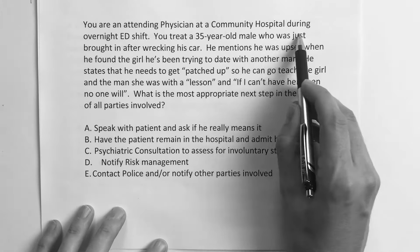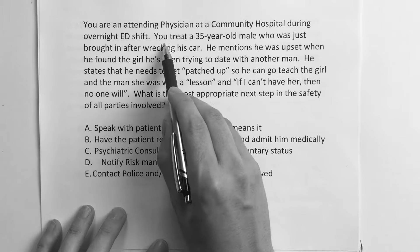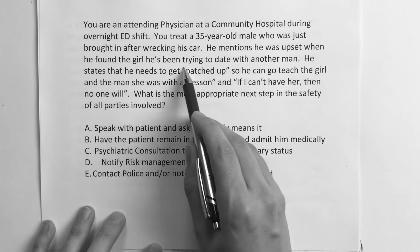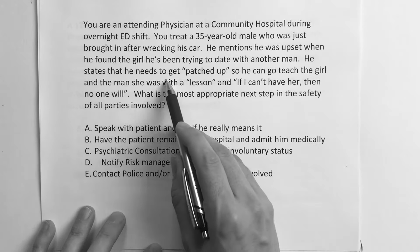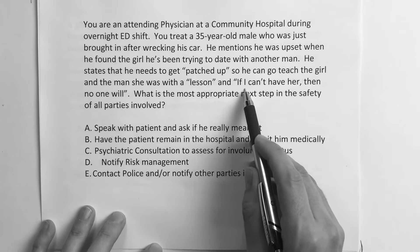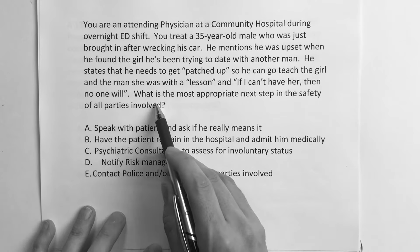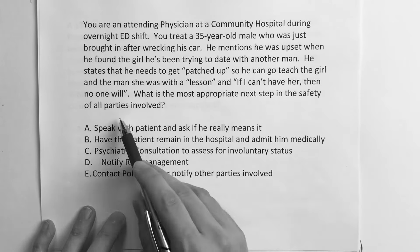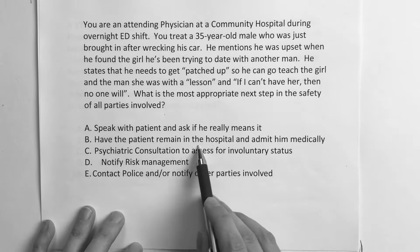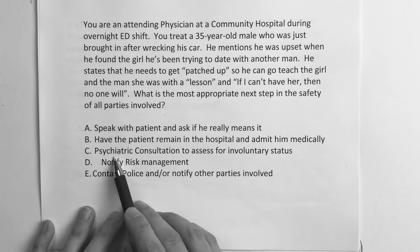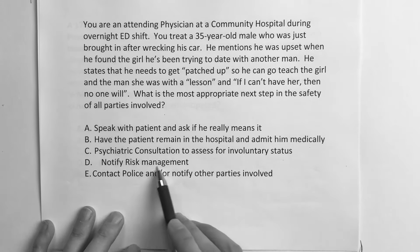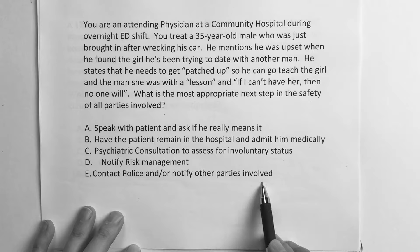You are an attending physician at a community hospital during the overnight ED shift. You treat a 35-year-old male brought in after wrecking his car. He mentions he was upset when he found the girl he's been trying to date with another man. He states he needs to get patched up so he can go teach the girl and the man a lesson, and 'if I can't have her, then no one will.' What is the most appropriate next step for the safety of all parties? A, speak with the patient and ask if he really means it? B, have the patient remain in the hospital medically? C, psychiatric consultation to assess for involuntary status? D, notify risk management? Or E, contact police and notify the other parties involved?